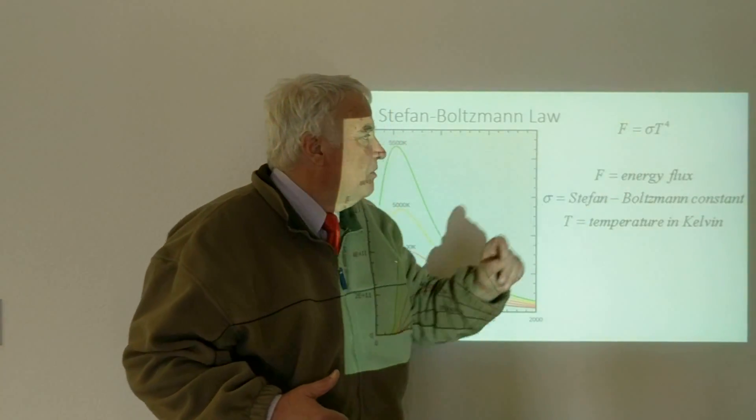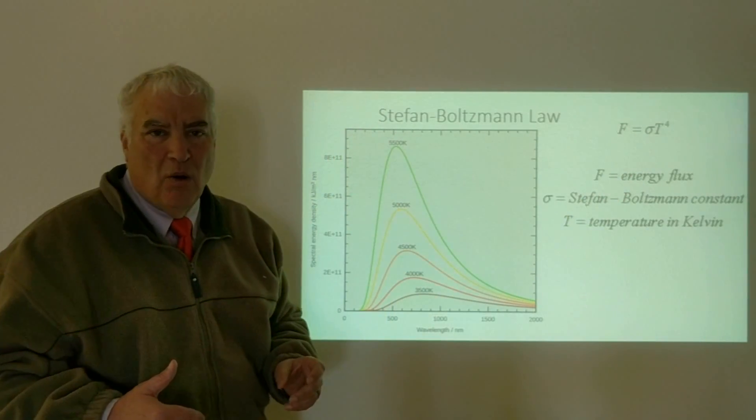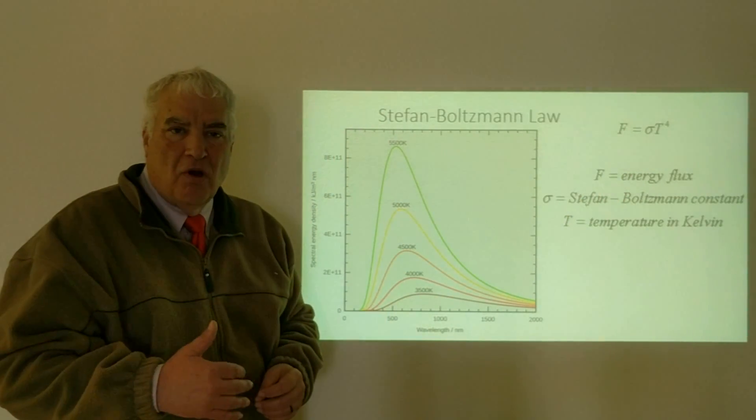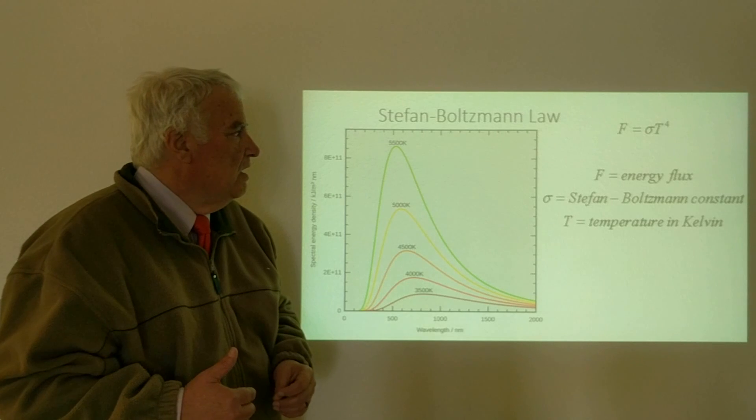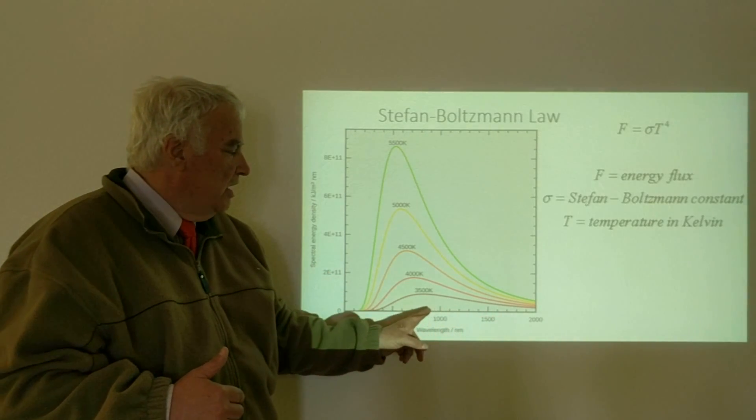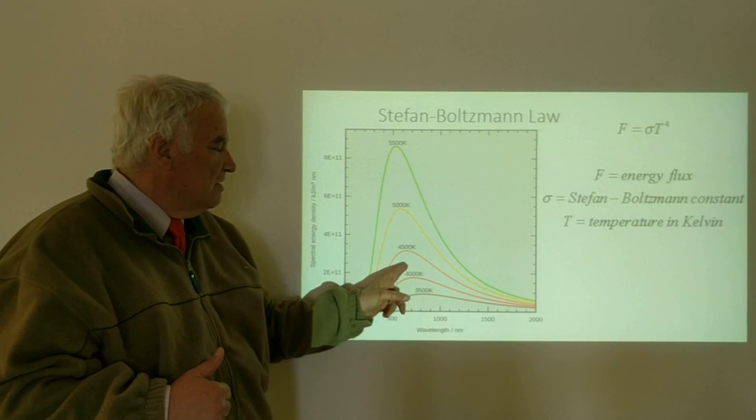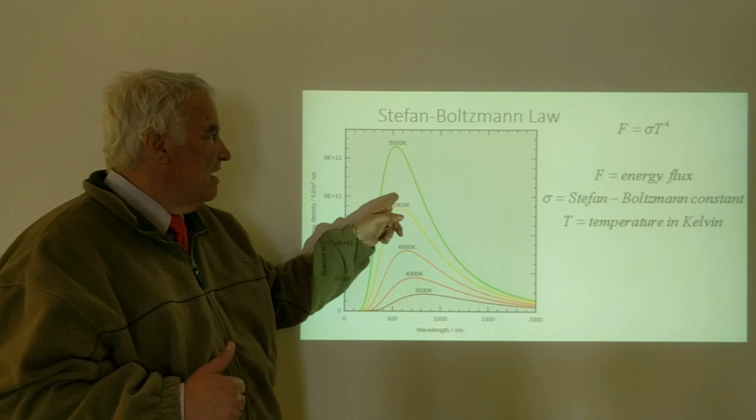The way this works is the brightness is a constant called the Stefan-Boltzmann constant times the temperature to the fourth power. This is a very strong function of the temperature, so as the temperature increases.